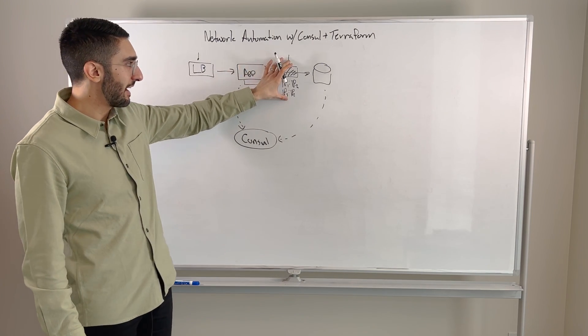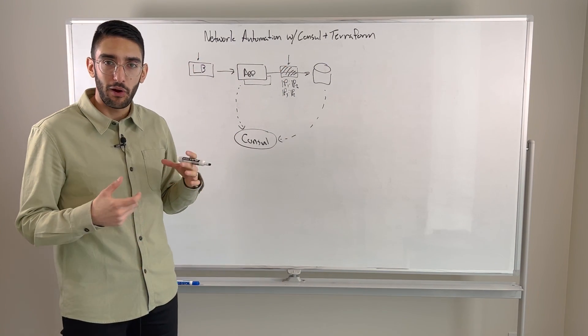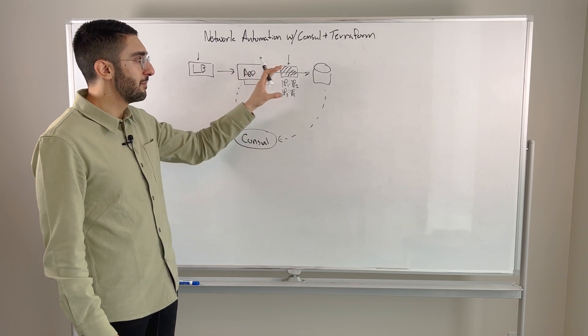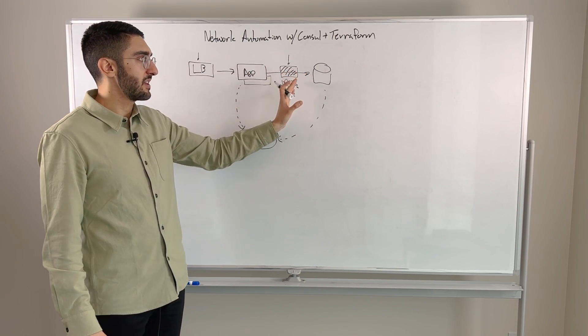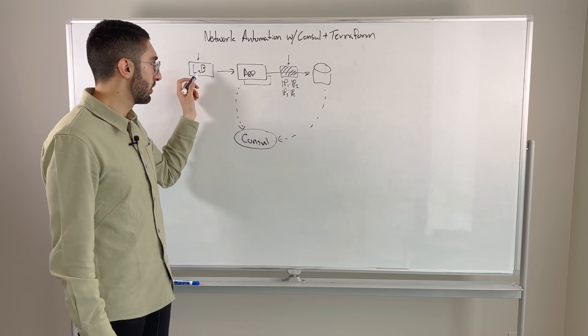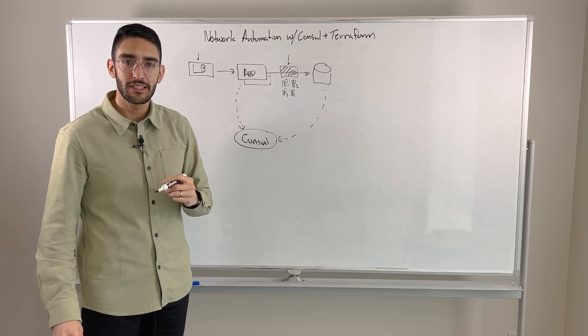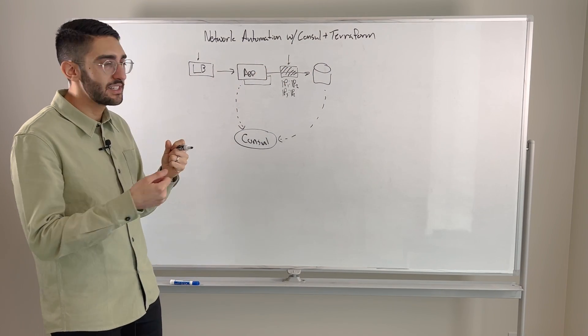But in this case, we still have a firewall and a load balancer. These might be hardware devices, might be software appliances that are in between, and those things have a set of rules that need to be managed. The load balancer needs to know about the backends, the firewall needs to know which IPs to grant, and so there's a bit of a disconnect here.